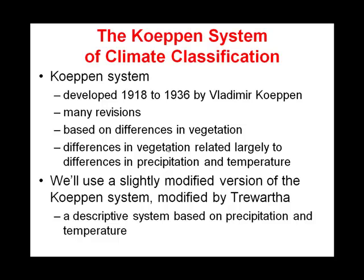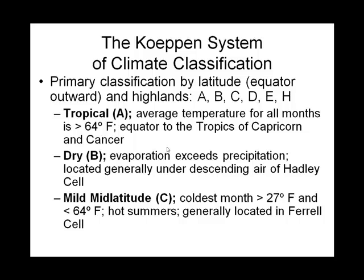What Köppen did is he noticed that between regions the vegetation differed. And as the slide says, why did the vegetation differ? It was mostly because of differences in temperature and precipitation. So temperature and precipitation is the answer.